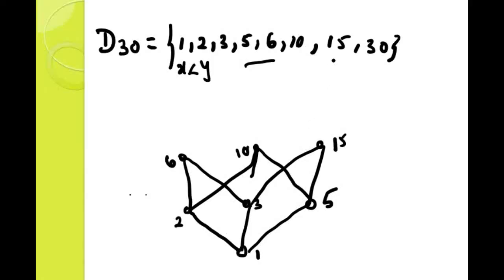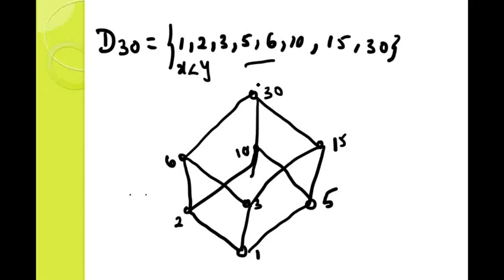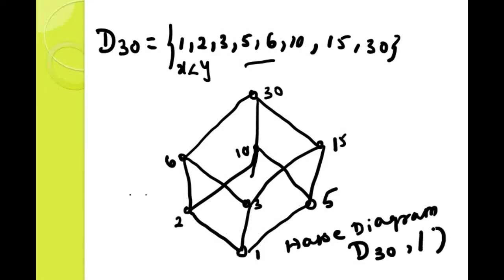For element 30: 15 divides 30, 10 also divides 30. 3 also divides 30 but that gives a transitive property. 6 also divides 30. 2 divides 30, but connecting 2 to 30 gives a transitive property. 1 also divides 30, but again that is a transitive property. Therefore, this is the Hasse diagram for divisor 30 under the division relation. This is how we find the Hasse diagram. I hope you are enjoying this video. Thank you.